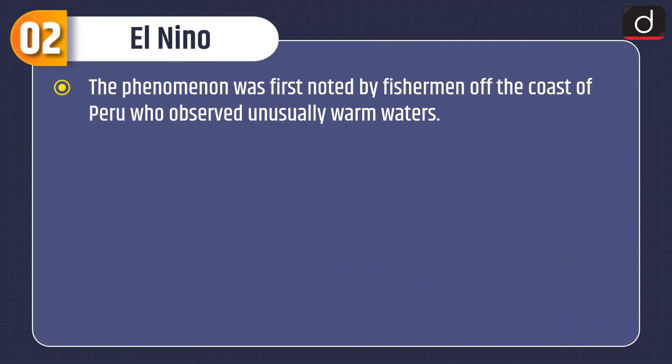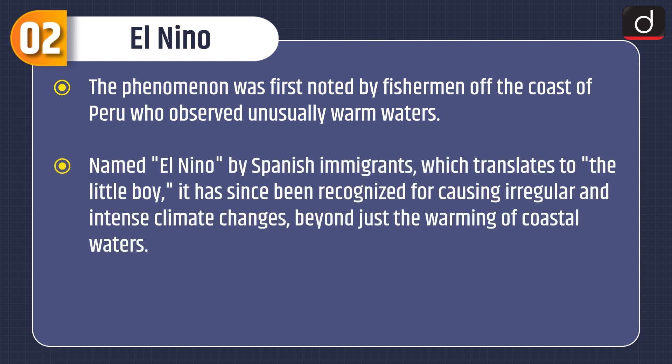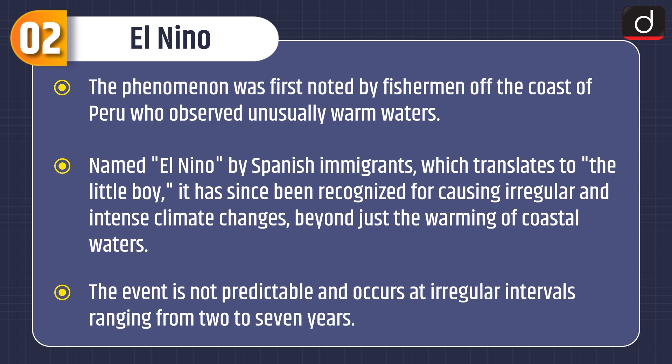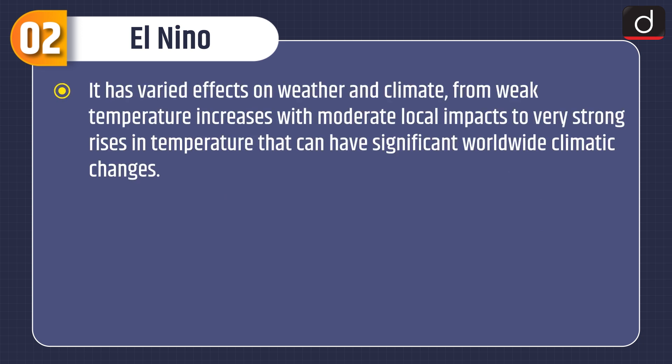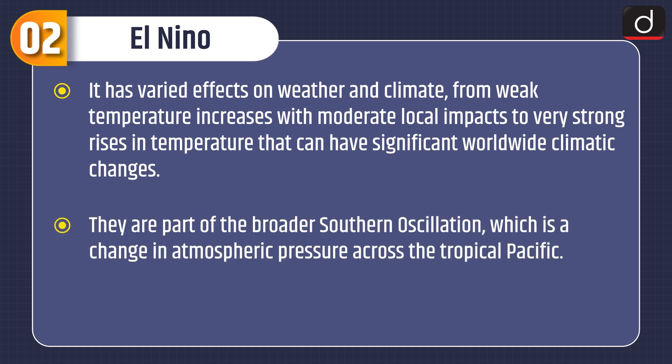Now let's discuss about El Niño. The phenomenon was first noted by fishermen off the coast of Peru who observed unusually warm waters. Named El Niño by Spanish immigrants, which translates to 'the little boy,' it has since been recognized for causing irregular and intense climate changes beyond just the warming of coastal waters. The event is not predictable and occurs at irregular intervals ranging from 2 to 7 years, with varied effects on weather and climate — from weak temperature increases with moderate local impacts to very strong rises in temperature that can have significant worldwide climatic changes. They are part of the broader Southern Oscillation, which is a change in atmospheric pressure across the tropical Pacific.